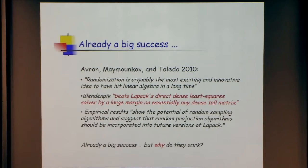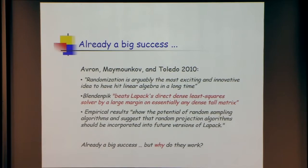We talked for five hours — what was going to be 15 minutes turned into dinner. Eight months later I got a manuscript saying 'randomization is arguably the most exciting and innovative idea to hit linear algebra in a long time.' The code they developed beats LAPACK's direct dense least-squares solvers by a large margin on essentially any tall dense matrix. The empirical results suggest random projections should be incorporated into future versions of LAPACK.